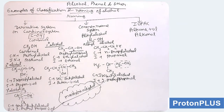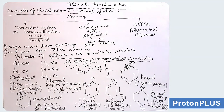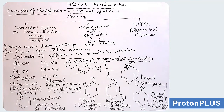In all these examples there is only one OH group, so the category is monohydric alcohol. When more than one OH group is there, then the IUPAC name follows alkane plus -ol, but this time the 'e' of the parent hydrocarbon chain will be retained along with the number of OH groups. If two OH groups are there, we write diol; if three OH groups, we write triol.